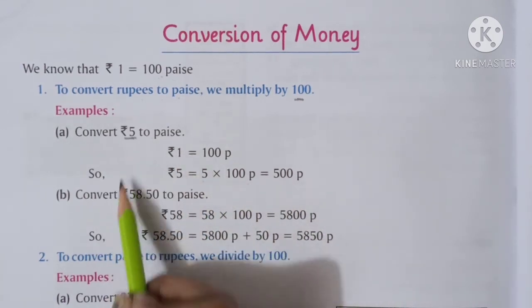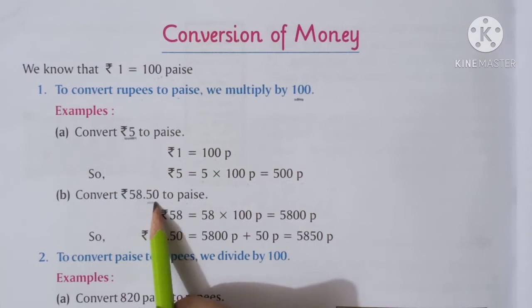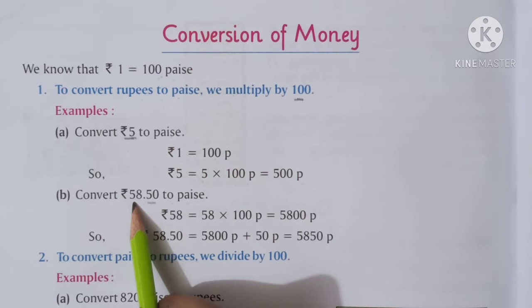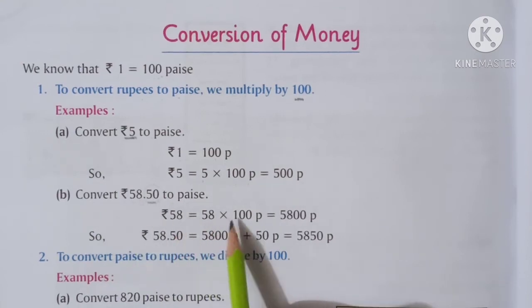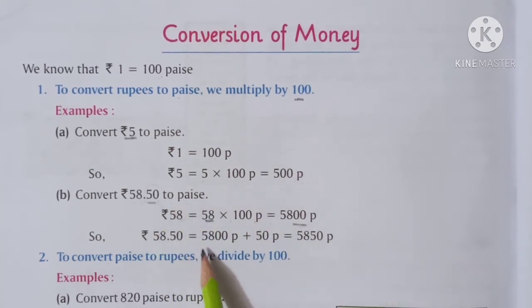Next, convert rupees 58.50 to paise. We already know that point ke after ye kya hai? Paise. And point se before rupees. So ye toh already paise hai, 50 paise. 58 rupees ko hum convert karenge paise. We will multiply with 100. So 58 multiplied 100 paise, that is 5800 paise. And already humein kitne paise milein hain? 50 paise. We will add 5800 paise plus 50 paise. So our answer will be 5850 paise.